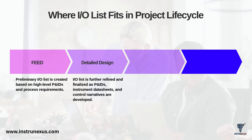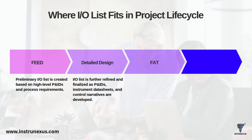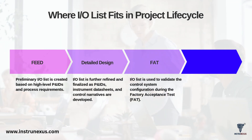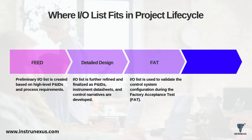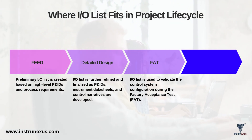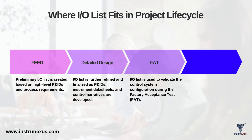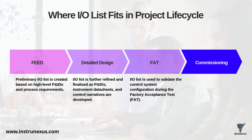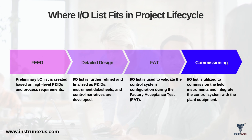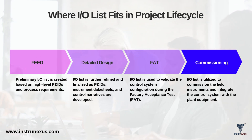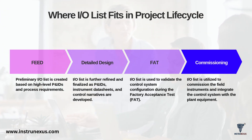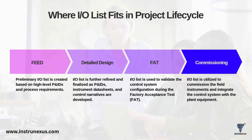Then it's time for the FAT, or factory acceptance test. The IO List is used as a validation tool to check the control system configuration against the design, point by point. Finally, during commissioning, the IO List moves to the field. It's the key document used to commission the field instruments, perform loop checks, and integrate the control system with the live plant equipment.